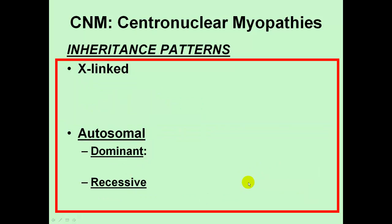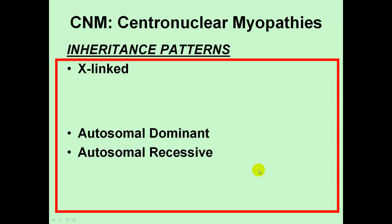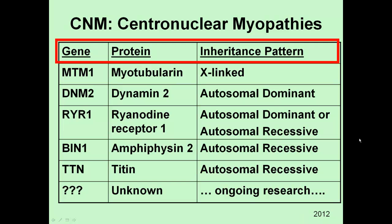To summarize: you have X-linked conditions and autosomal conditions, and the autosomal conditions are broken down into autosomal dominant and autosomal recessive. If you remember these three different types of inheritance patterns, you'll understand the basic framework needed for centronuclear myopathies and really for all genetic conditions. I've created a table to display in a clear, easy-to-understand way the different genes involved in the different versions of centronuclear myopathies — what gene is involved, what protein it codes for, and what the inheritance pattern is for each subtype.